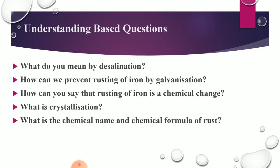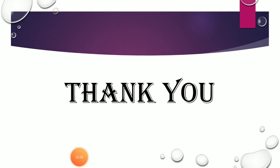This completes Chapter 6. Understanding-based questions: What do you mean by desalination? How can we prevent rusting of iron by galvanization? How can you say rusting of iron is a chemical change? What is crystallization? What is the chemical name and formula of rust? Watch both parts of this chapter carefully, read the chapter, and try to solve the objective questions in your book. Thank you, class.